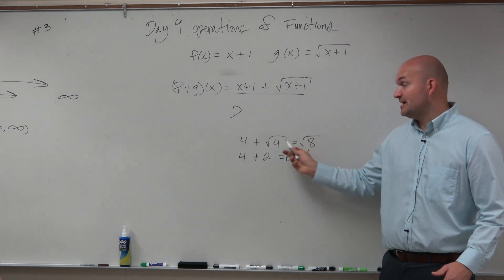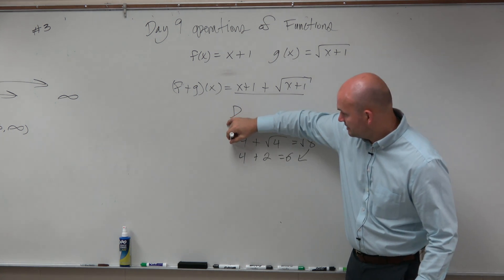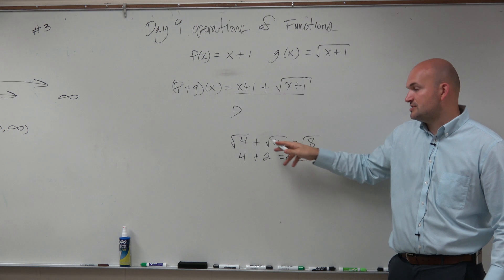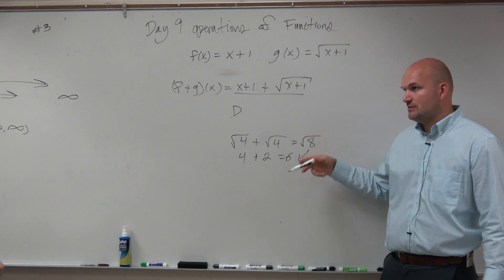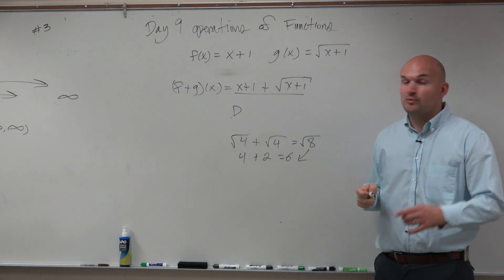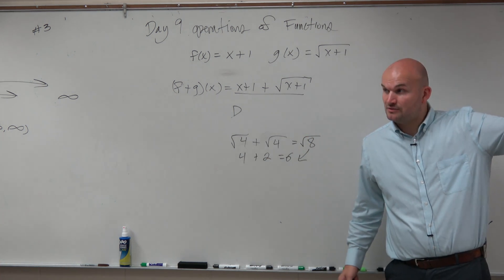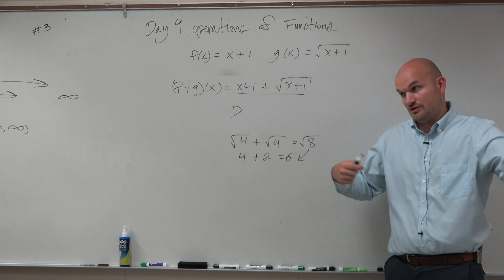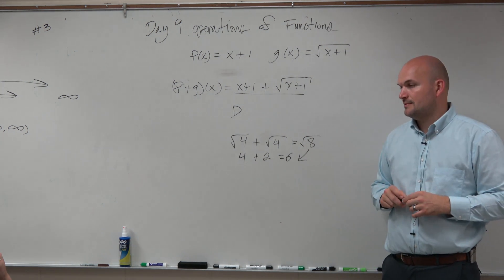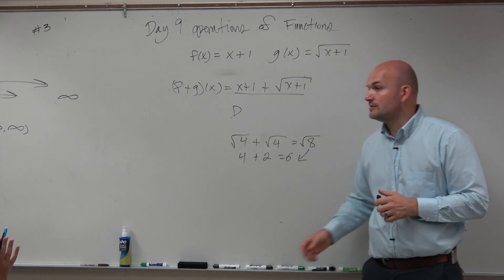Multiplication you can do under a radical — like if both are under a radical, you can multiply them to give you the square root of 16, which would be 4. But it only works when you're both under a radical. If one's under a radical and one's not, you can't do that. Same thing with addition — you can't add either.